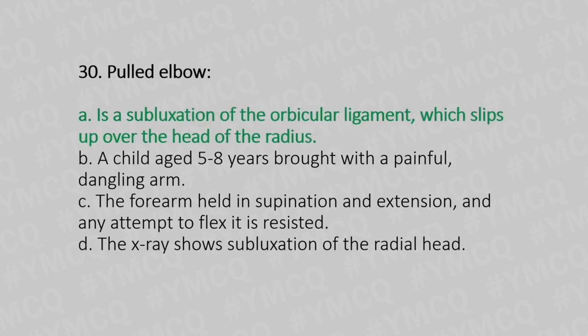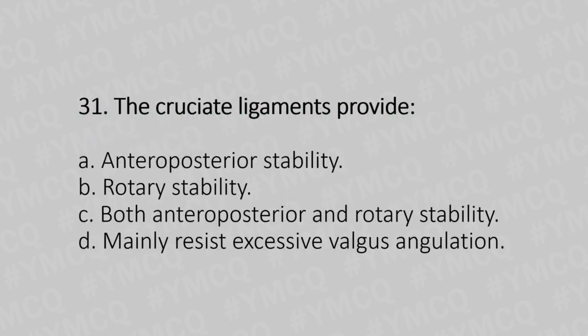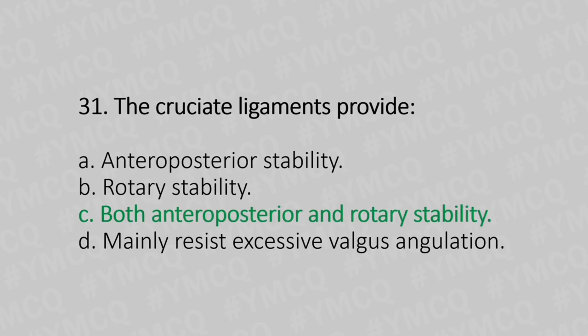Now let's move to question number 31. The cruciate ligaments provide. Option A: anterior-posterior stability. Option B: rotatory stability. Option C: both anterior-posterior and rotatory stability. Option D: mainly resist excessive valgus angulation. And the answer is Option C, both anterior-posterior and rotatory stability.